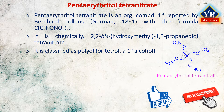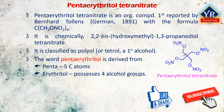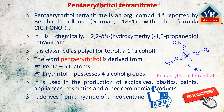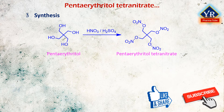The word penta erythritol is a blend of 'penta,' in reference to its five carbon atoms, and 'erythritol,' which also possesses four alcoholic groups. Penta erythritol is a chemical intermediate used in the synthesis and production of explosives, plastics, paints, appliances, cosmetics, and many other commercial products. It has a role as a flame retardant and a laxative, and it derives from a hydride of neopentane.